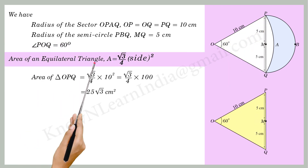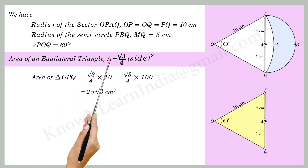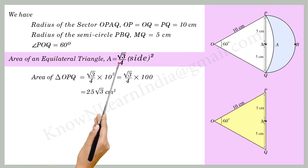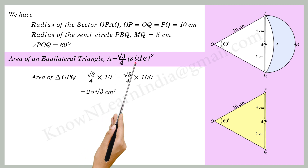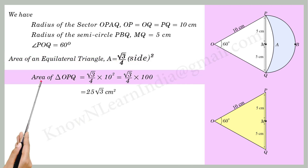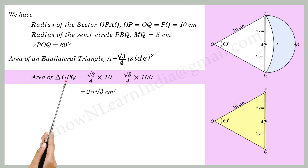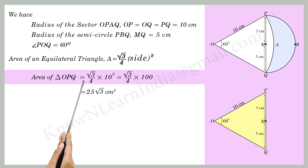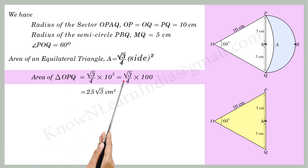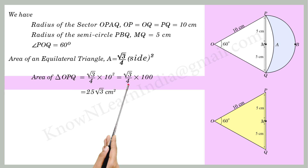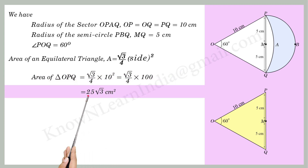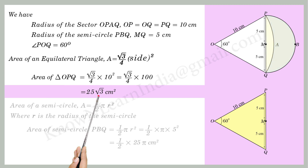Since triangle Opq is equilateral, the area of an equilateral triangle A is equal to root 3 by 4 into side squared. So the area of triangle Opq is equal to root 3 by 4 into 10 squared, which is equal to root 3 by 4 into 100, which equals 25 root 3 cm².